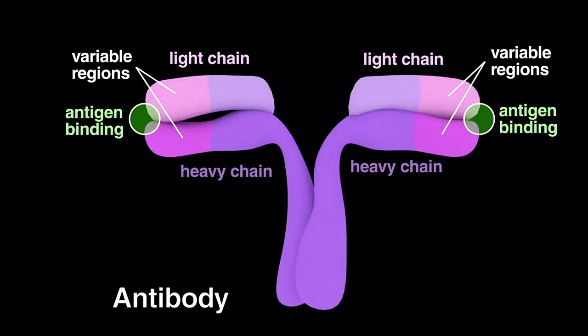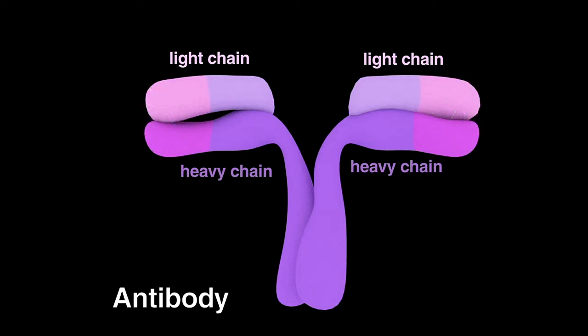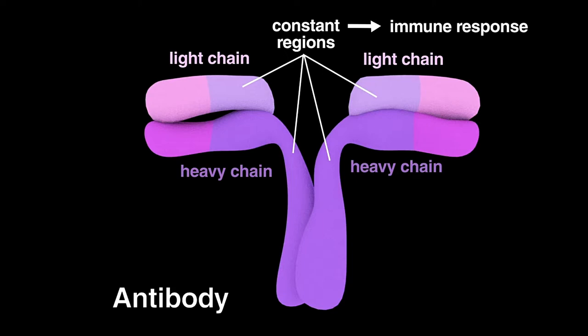Variable regions are involved in antigen binding. The other regions of the polypeptide chains vary very little in sequence among different antibodies from the same species and are called constant regions. The constant regions are responsible for interacting with effector proteins that mediate the immune response.